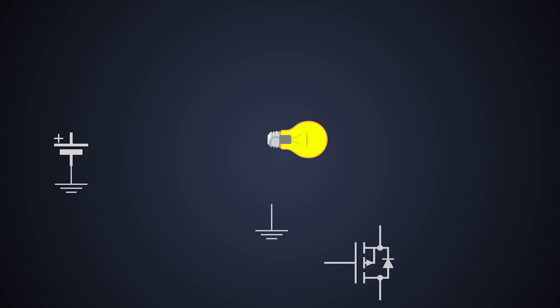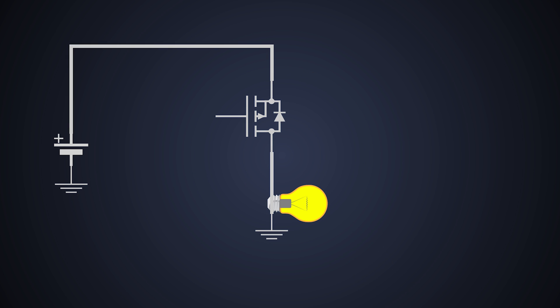For the P-channel MOSFET, we either need to provide a negative VGS at the gate, or we can connect the gate of the MOSFET to ground to turn it ON. It works the same way as an N-channel MOSFET.